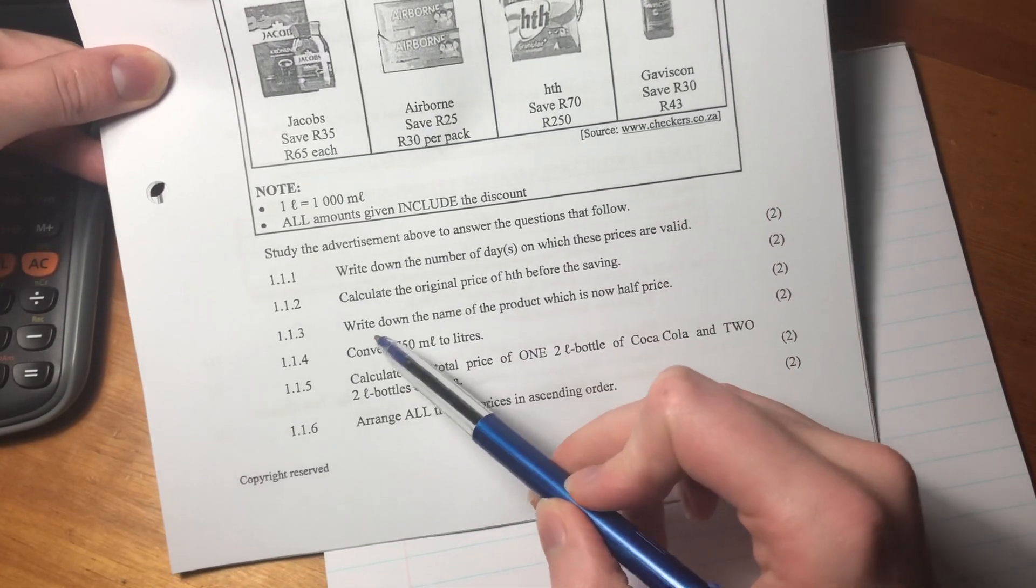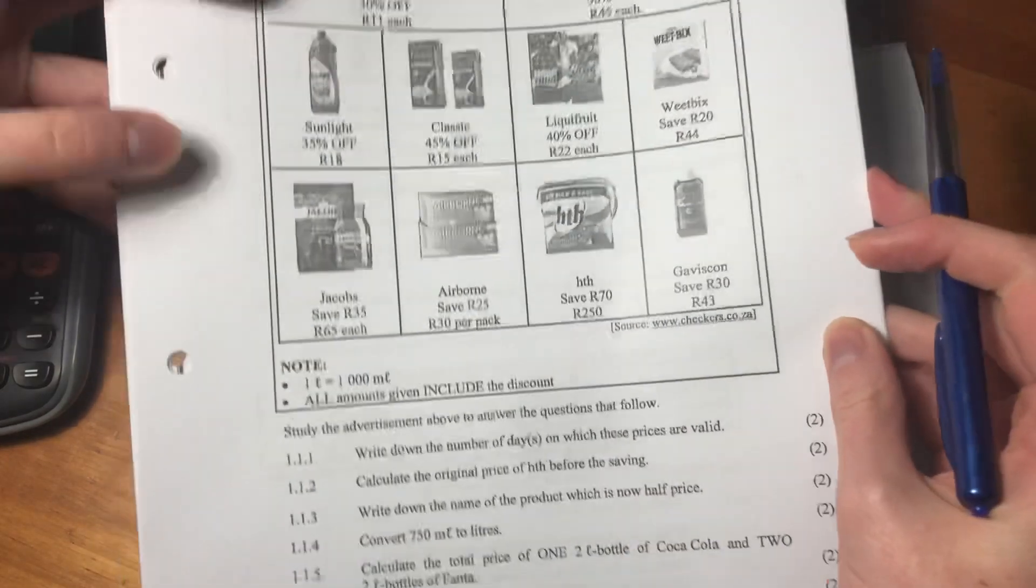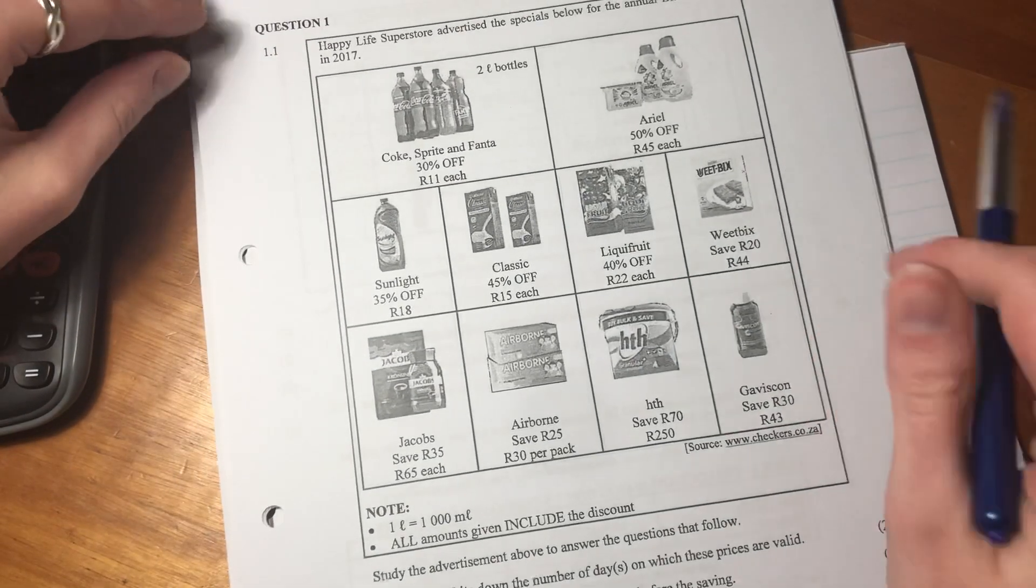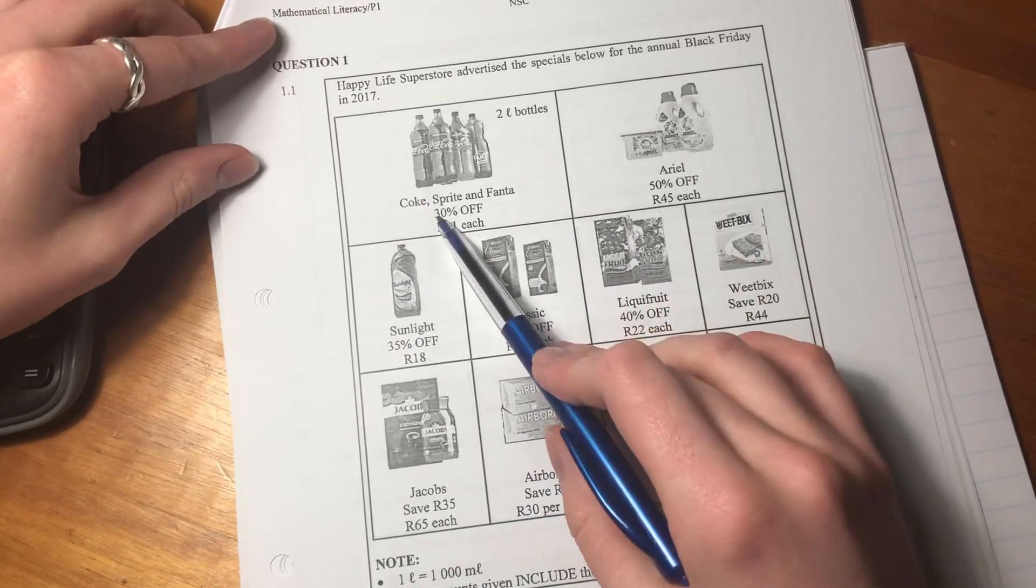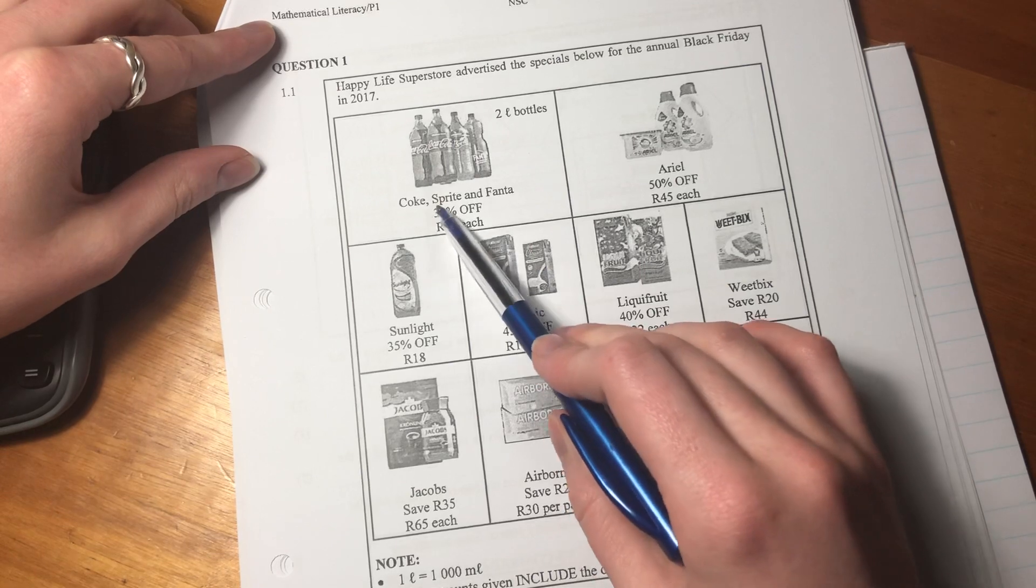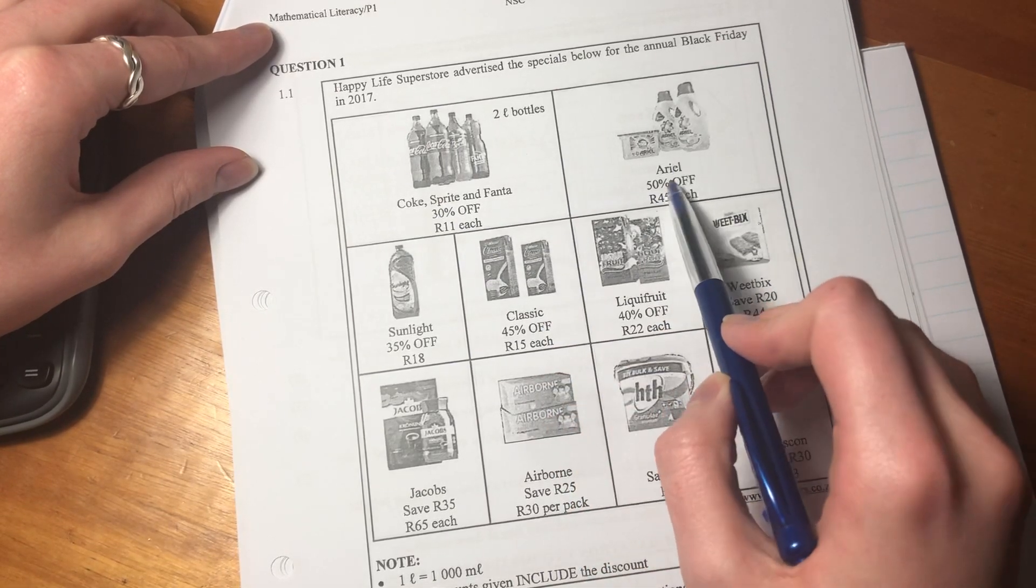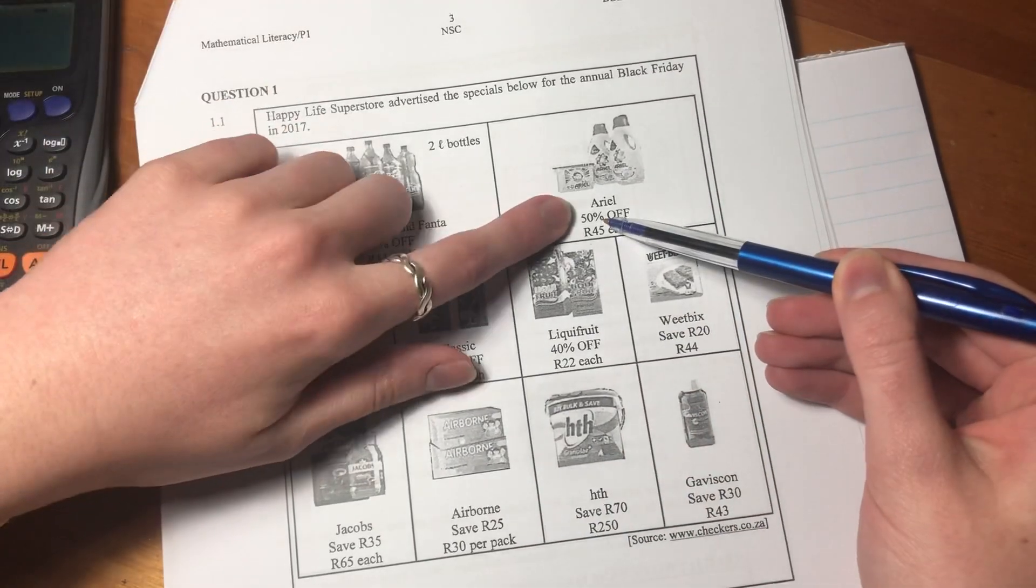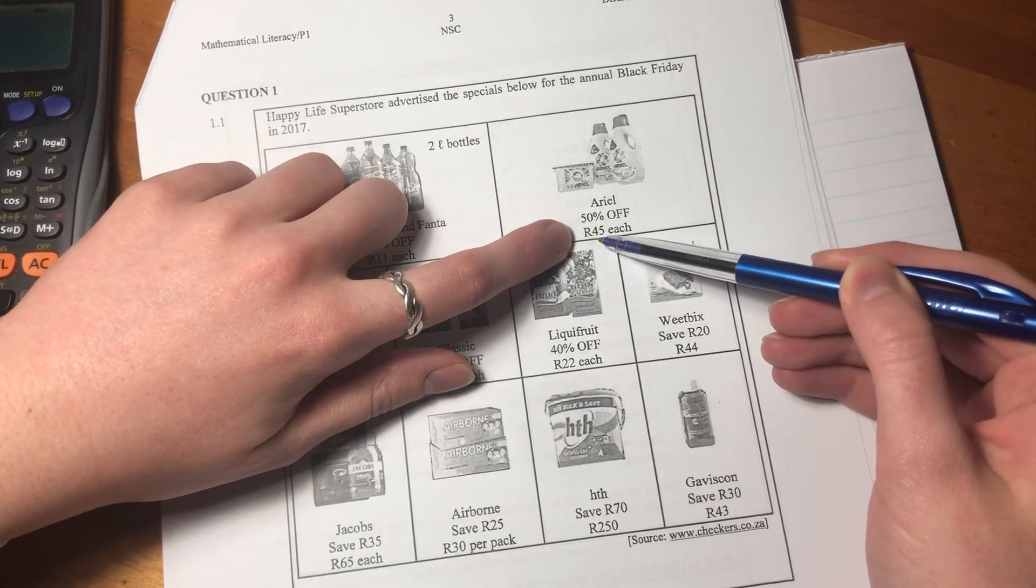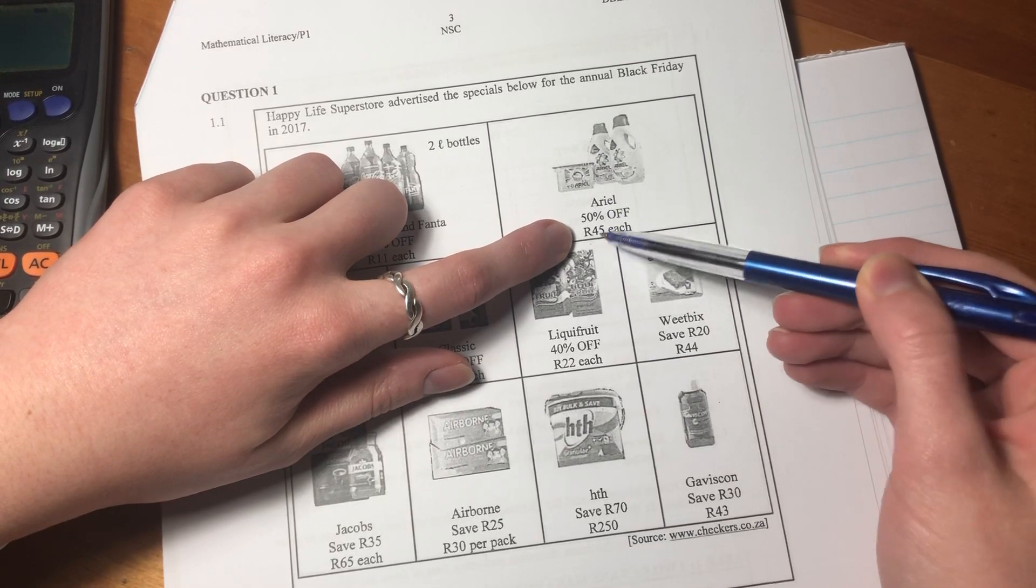1.1.3: Write down the name of the product which is now half price. If something is half price, you got half of its original price off. Here it said 30% off, that's not right. Here it says 50% off. Now that is half price.